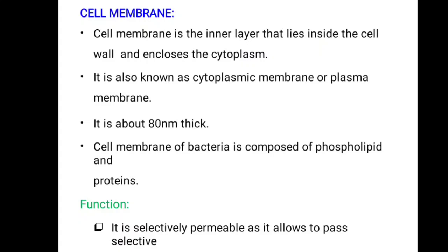Next is the cell membrane. The cell membrane is the inner thin layer that lies inside the cell wall and encloses the cytoplasm. It is also known as the cytoplasmic membrane or plasma membrane, with a thickness of 18 nanometers. The cell membrane of bacteria is composed of phospholipids and proteins. Its function is to act as a selectively permeable barrier, allowing only selective substances to pass.